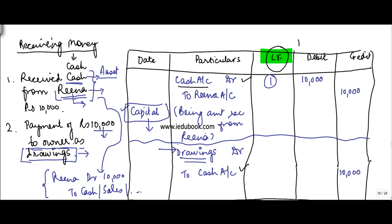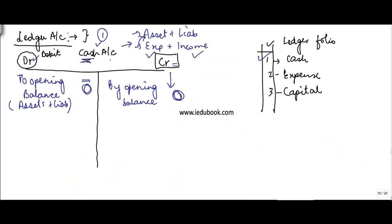When you prepare your journal, you would write one here. The entry is cash account debit to Rena account. The way it reads is: cash account debited to Rena account ten thousand. You read it in a sequential manner: cash account debited to Rena account.